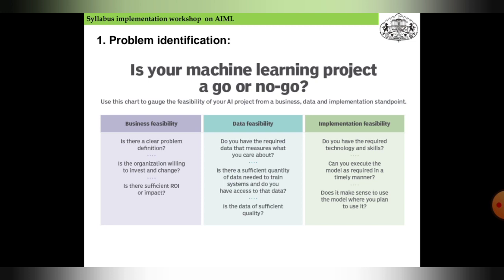Next comes data feasibility. Do you have the required data that measures what you care about? Is there a sufficient quantity of data needed to train the system? Do you have access to that data?